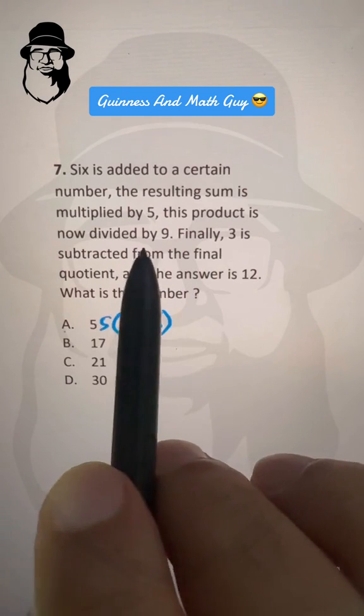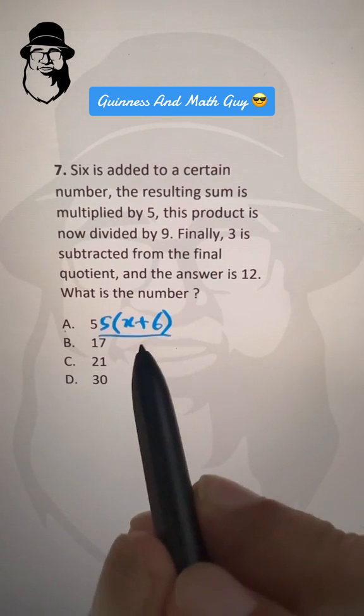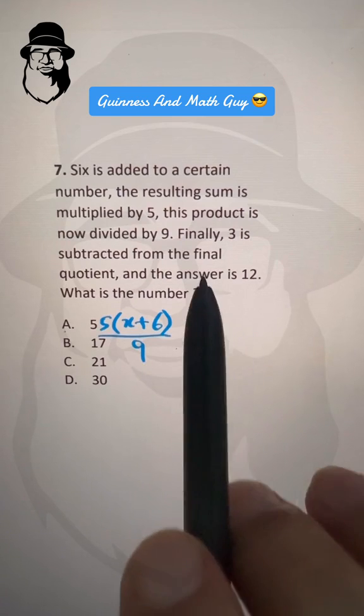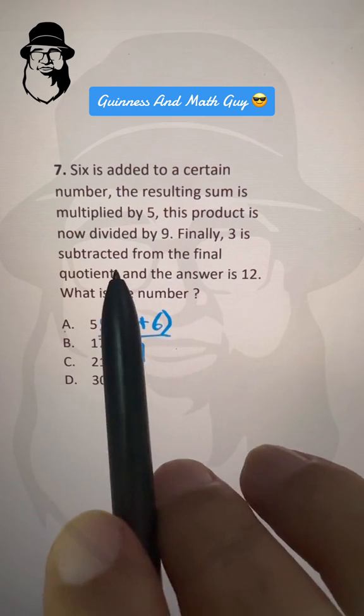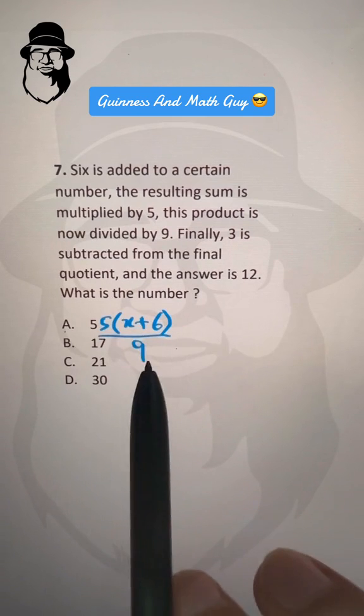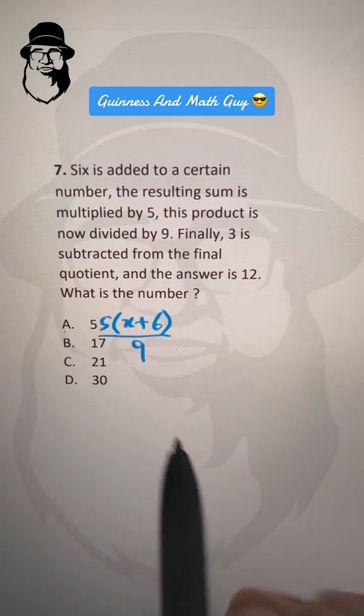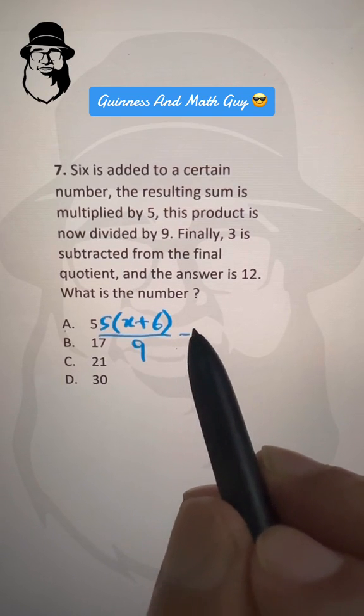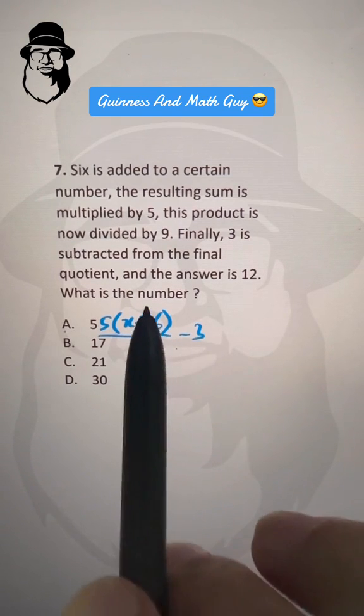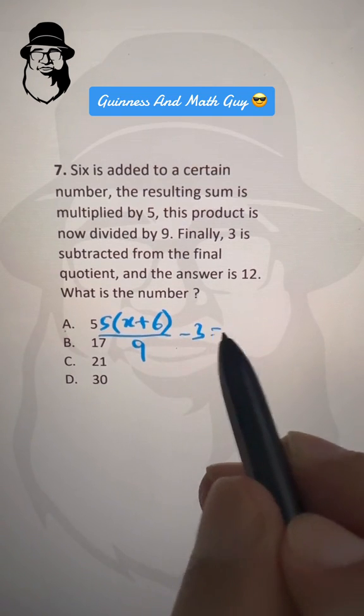This product is now divided by 9. So 3 is subtracted from the final quotient. Whatever the result of this division is, it's called quotient. Now we subtracted 3 from it, and the answer is 12.